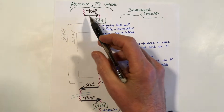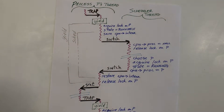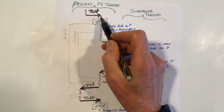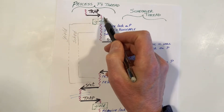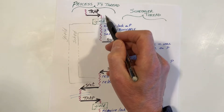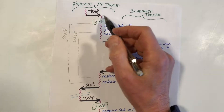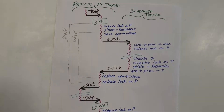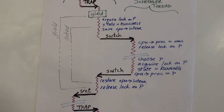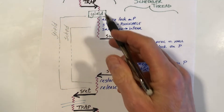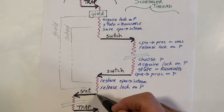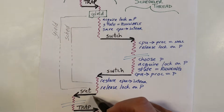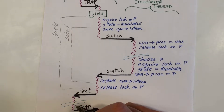Looking at that area more closely, we see that the trap happens, and we determined that it's not a system call and not a device that needs interrupt handling. We end up calling the yield function. And ultimately, we return from yield, do some other stuff, execute the SRET, and go back to the user mode code.